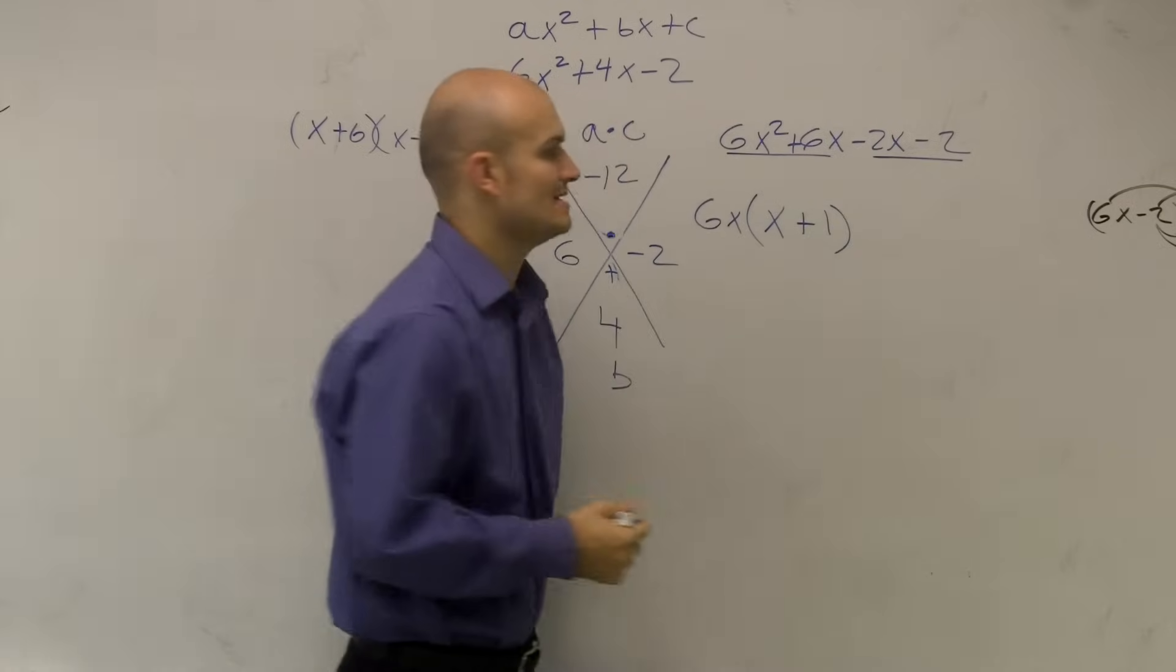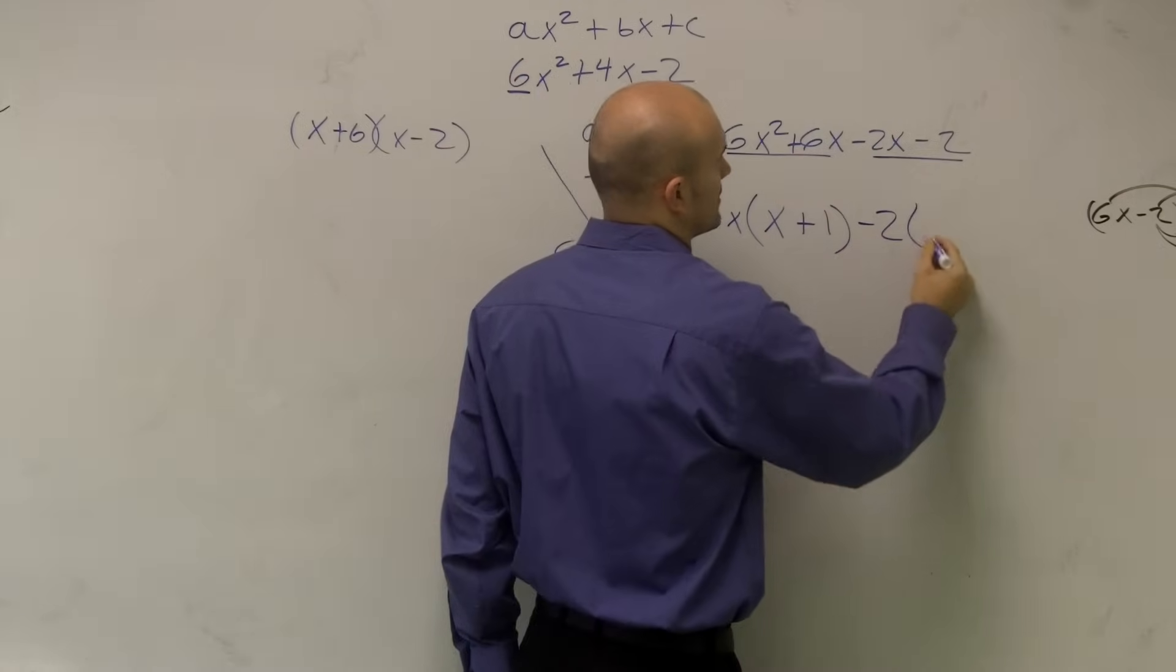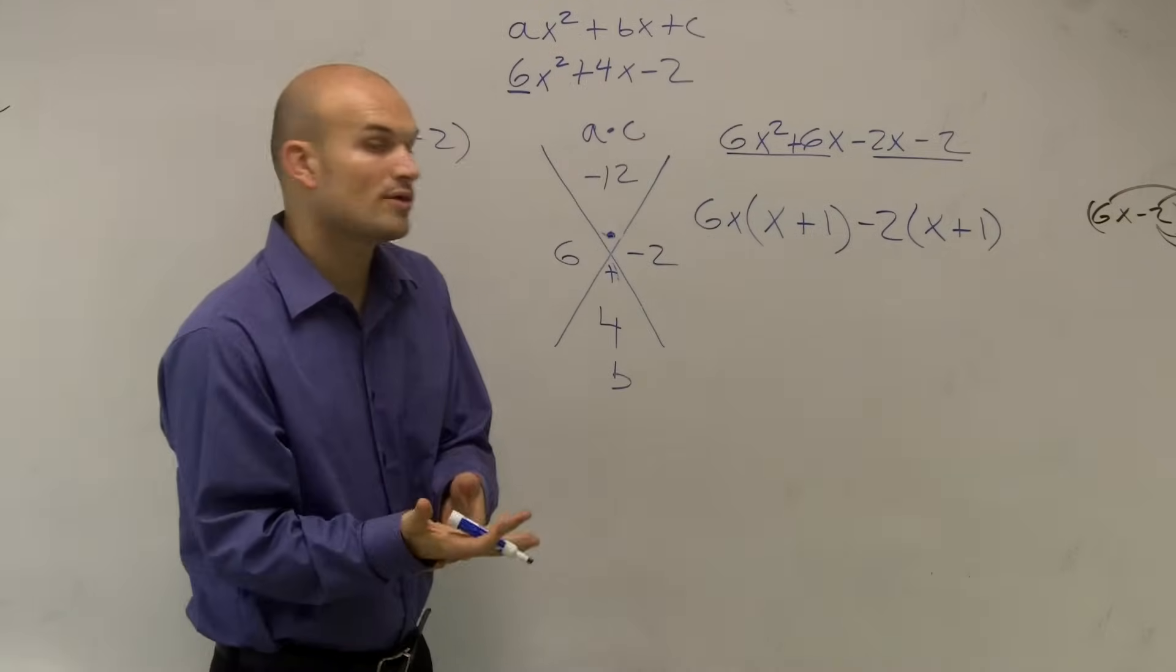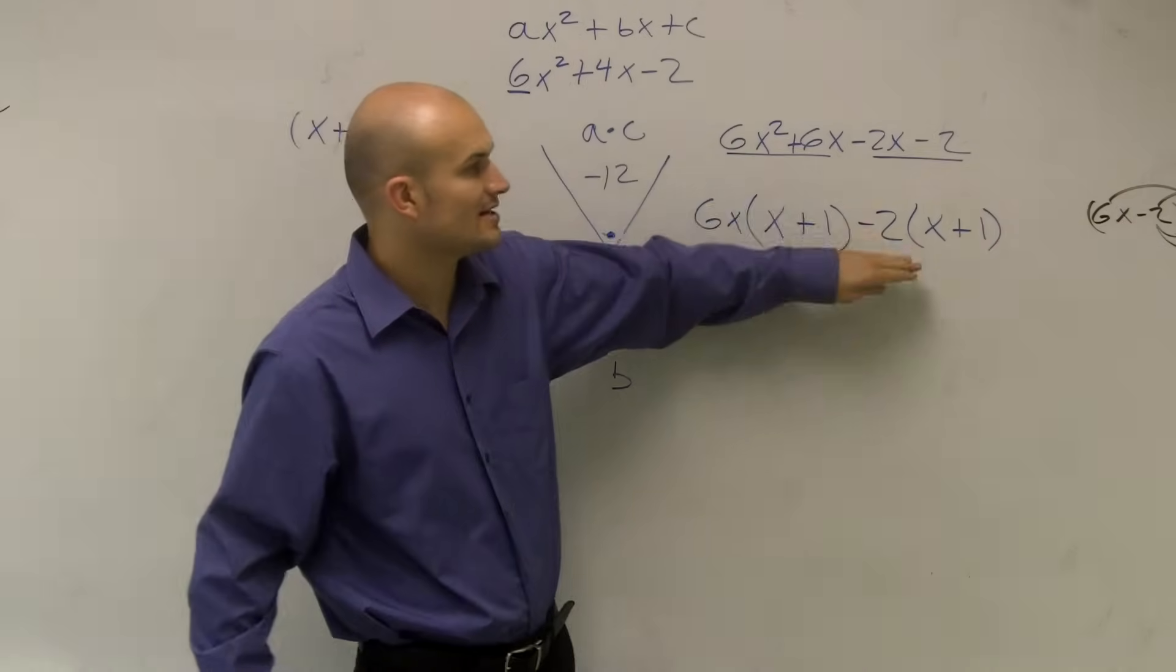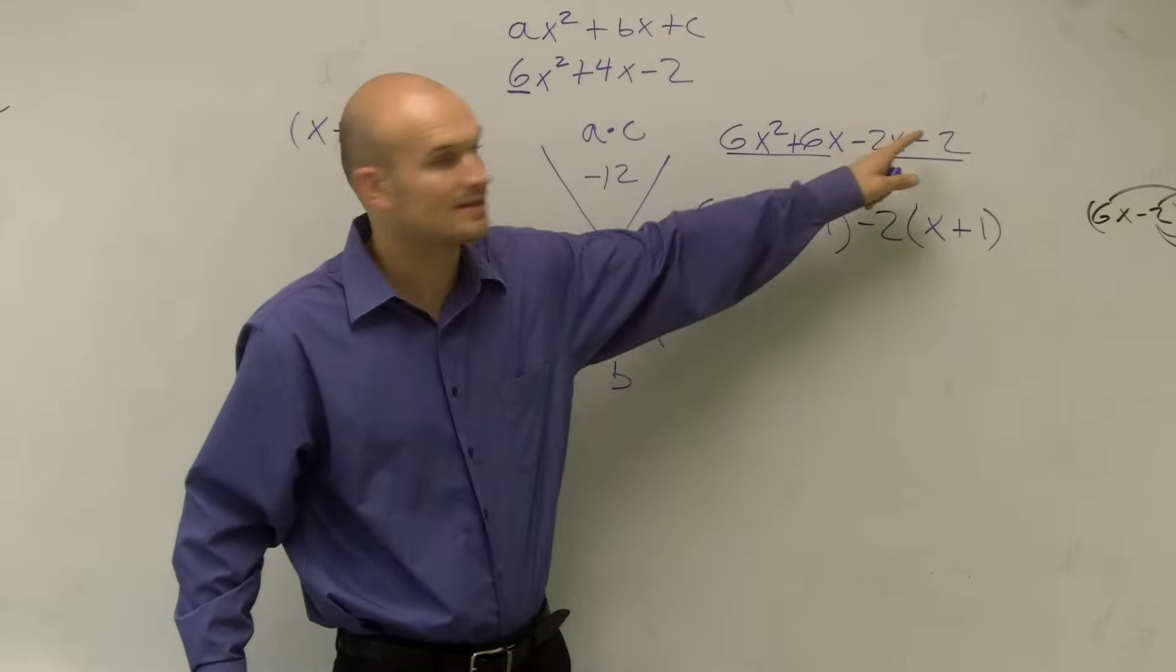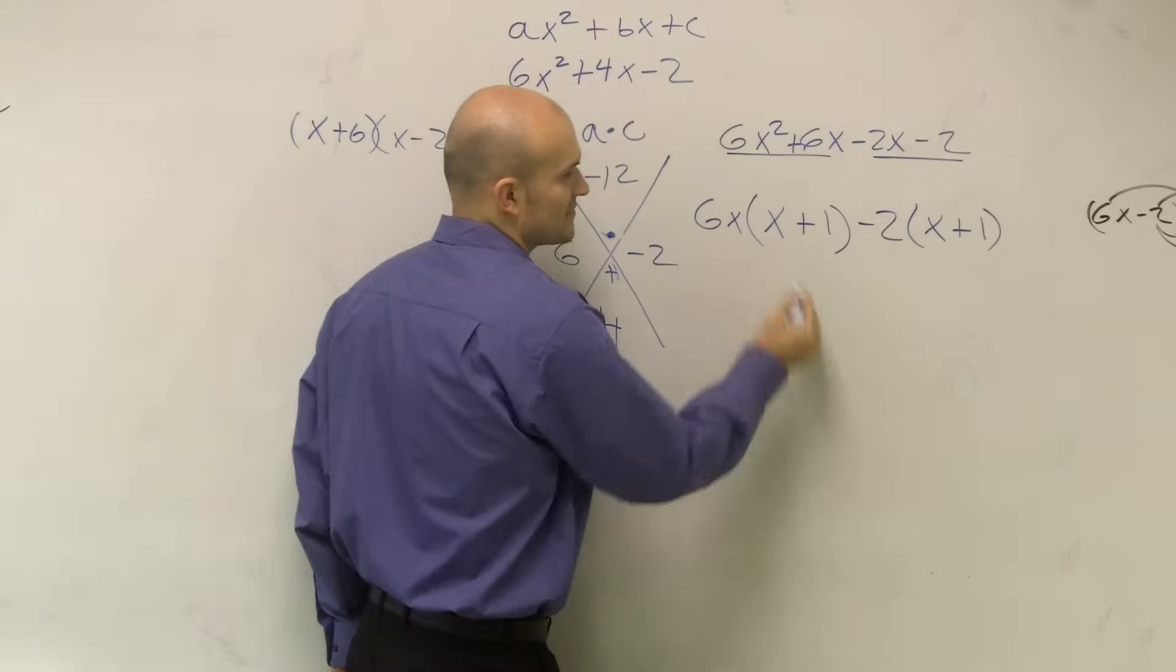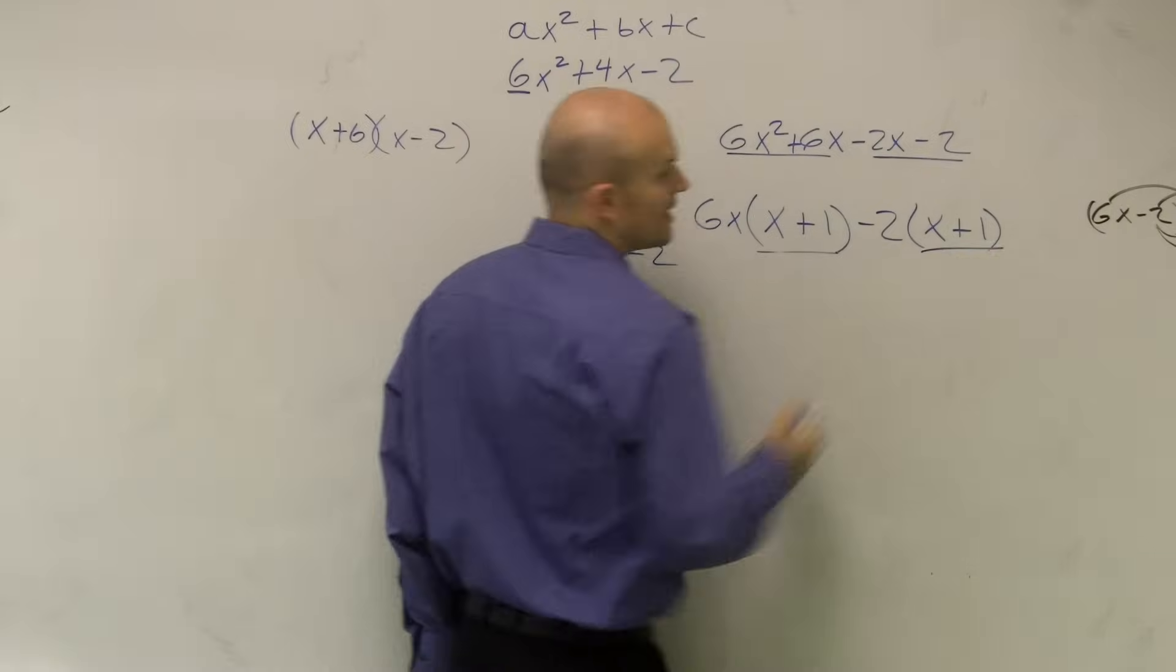Here, I can now divide out a negative 2 times x plus 1. So since I divide out a negative 2, because that's the only thing that these two have in common, is a negative 2. When I factor out my negative 2, now I'm left with an x plus 1 and an x plus 1.